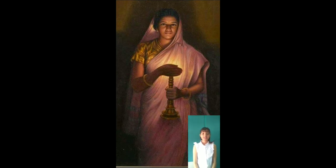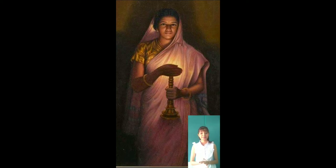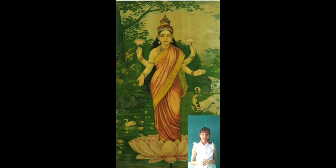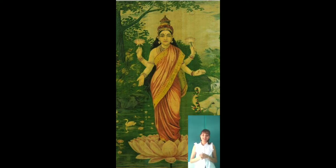He was awarded three gold medals for his work when his paintings were sent to Chicago to be displayed in the prestigious World Columbian Exposition held in the year 1893. His portrayals of Hindu gods and goddesses went on to become worship material for lower caste people who were forbidden from entering temples back then.